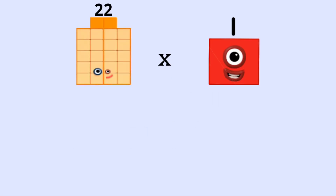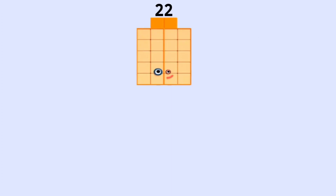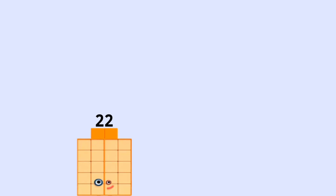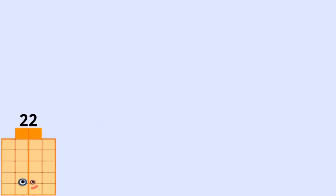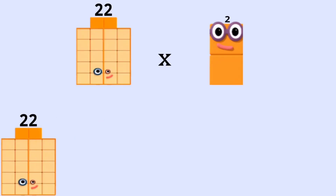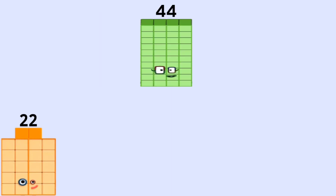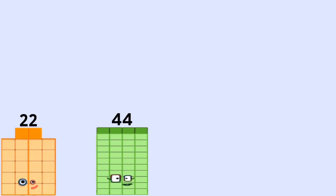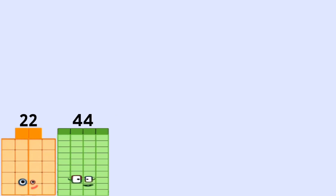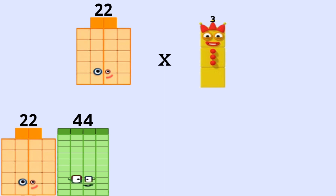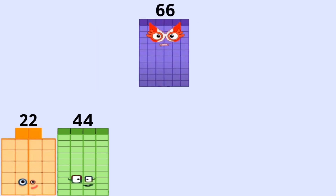22 times 1 equals 22. 22 times 2 equals 44. 22 times 3 equals 66.